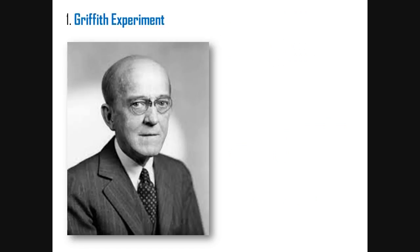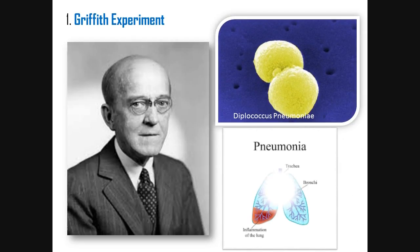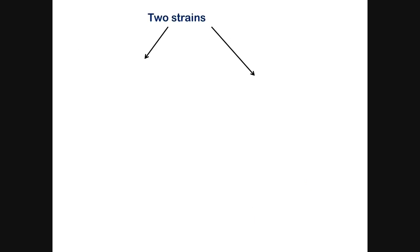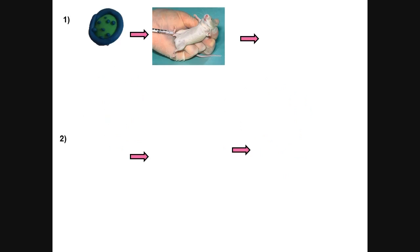Frederick Griffith was a British physician who used a bacterium called Diplococcus pneumoniae, which was known to cause pneumonia in mammals. He took two strains of bacteria: one was S-type, the smooth type, which has a capsule or covering around it. The second was R-type, also known as the rough type, which was non-capsulated, showing absence of a protective covering around it.